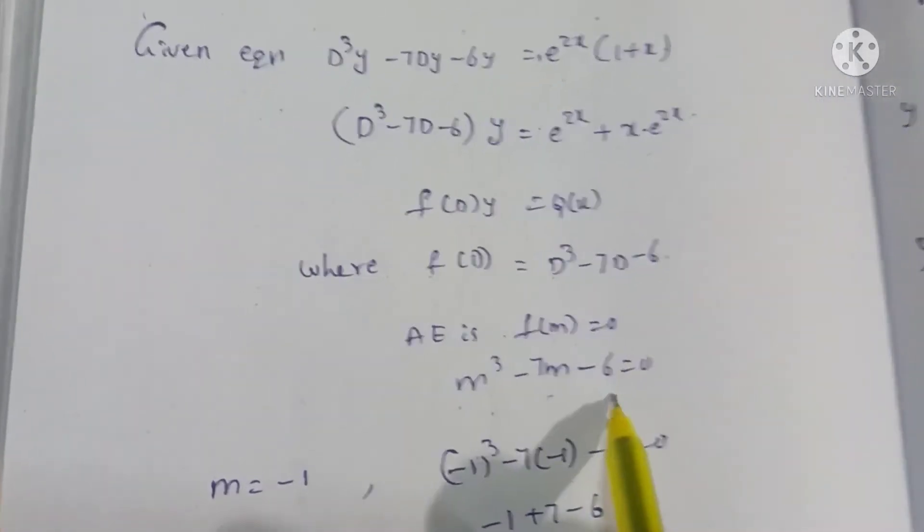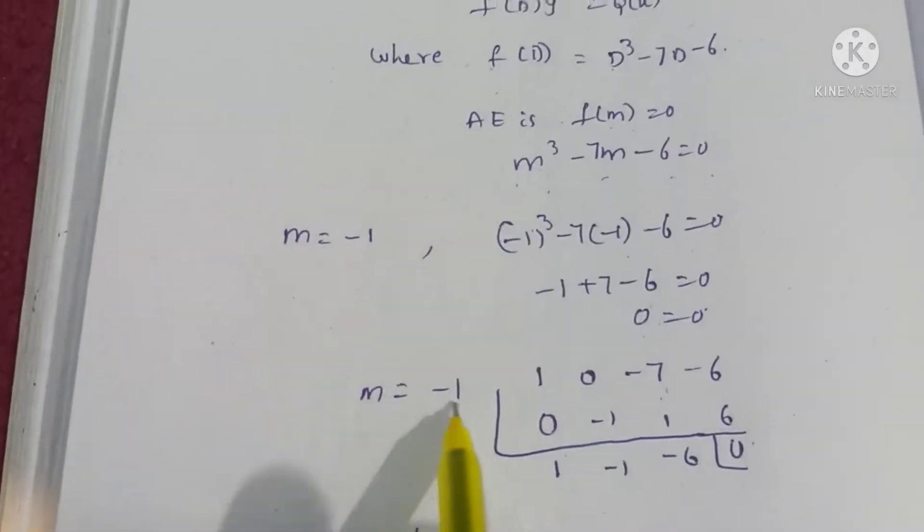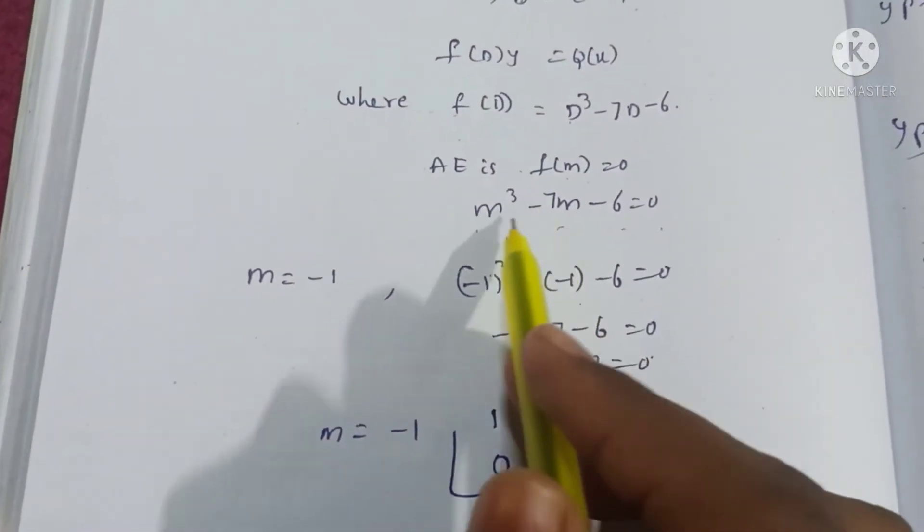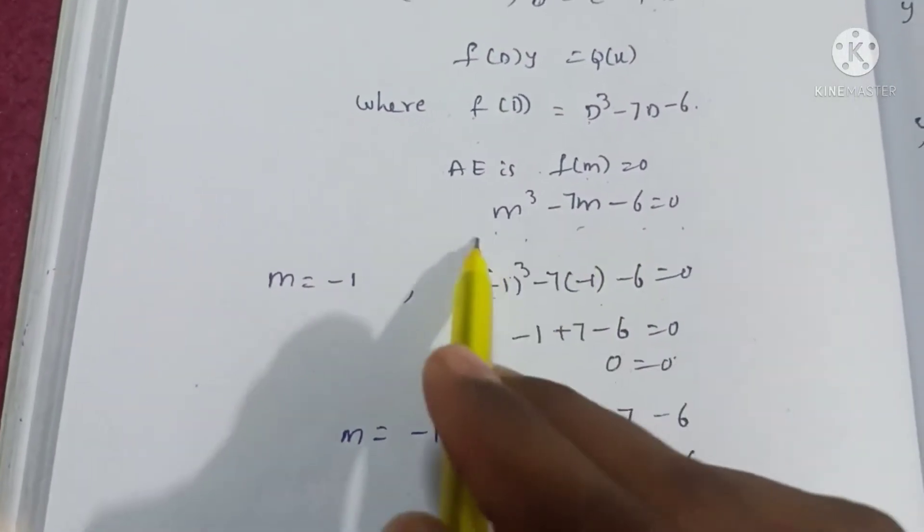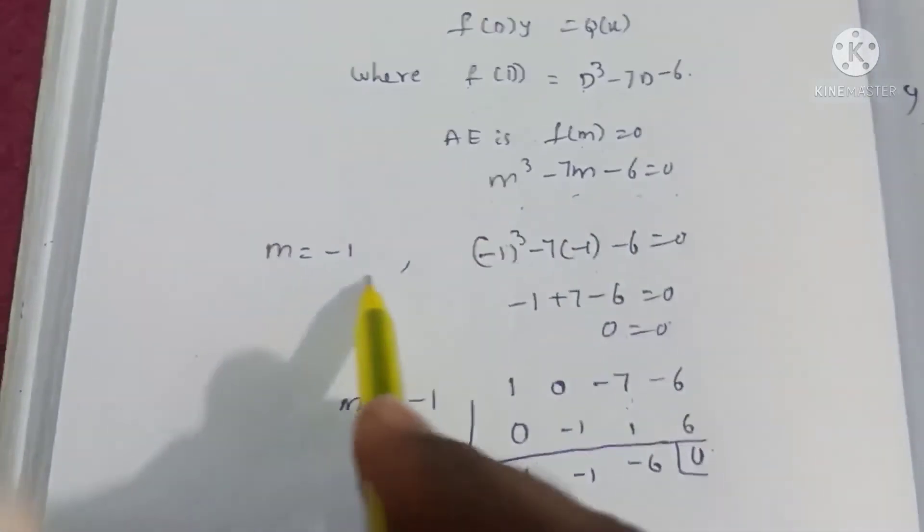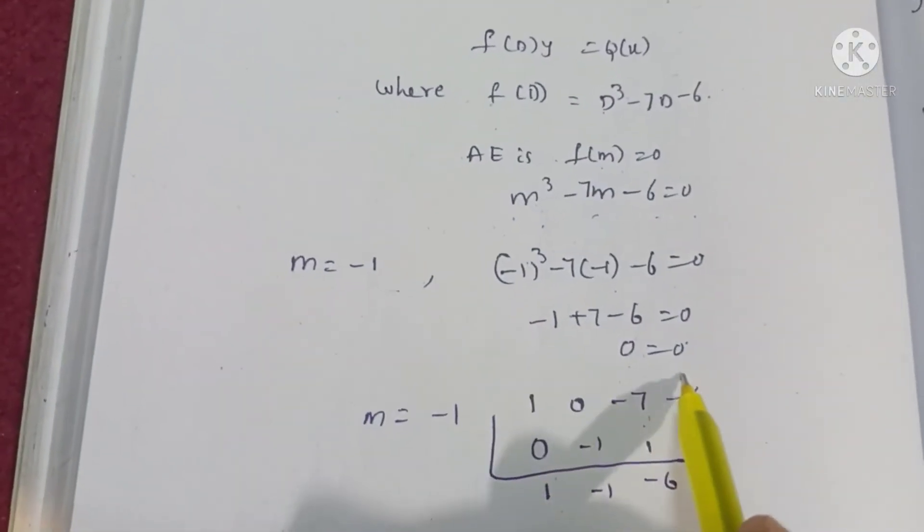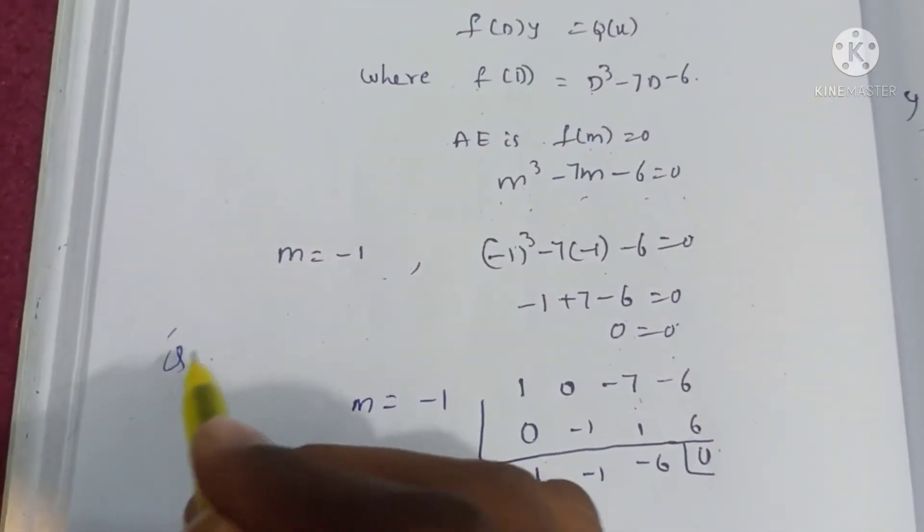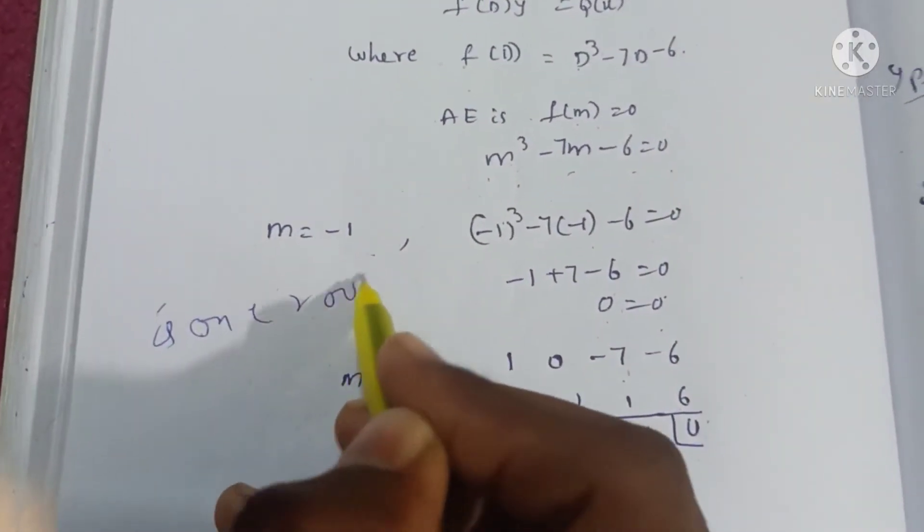D³ becomes m³, 7D becomes 7m, 6 times the constant. We have m³ with no m² term here. So we can try roots. If m = -1, then 0 = 0.